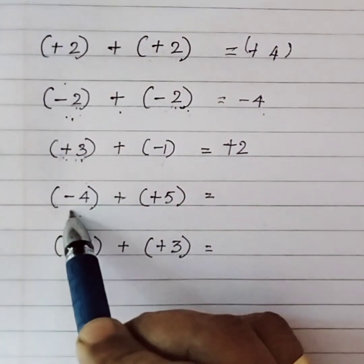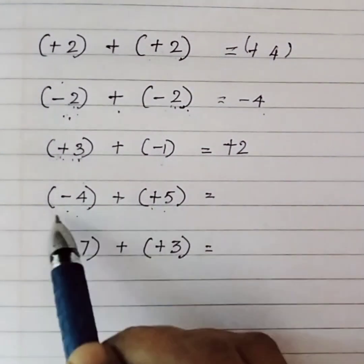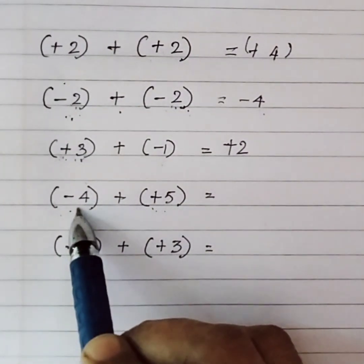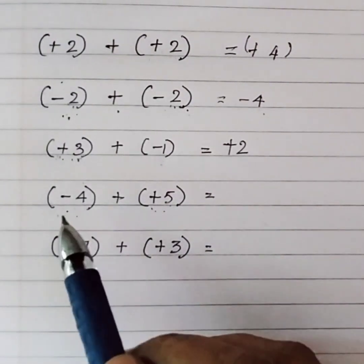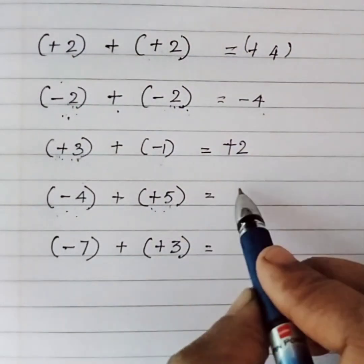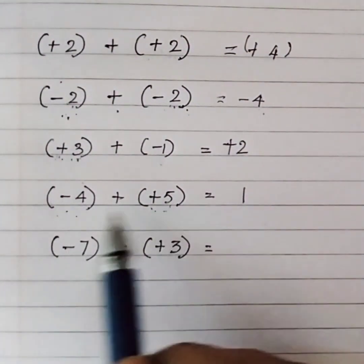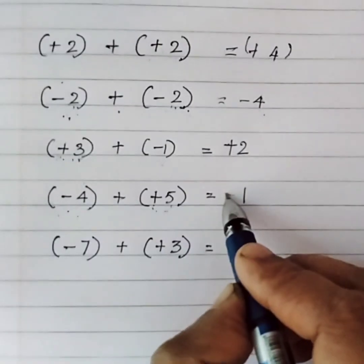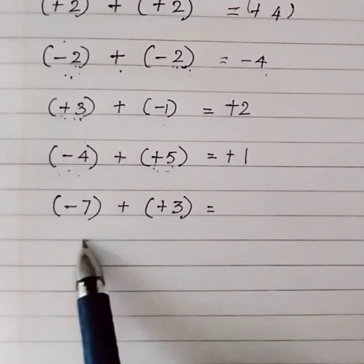Next question: (-4) + (+5). We're going to subtract. What is 5 minus 4? It's 1. What is the sign? The sign is plus because 5 is the larger number and 5 has plus. So it's +1.